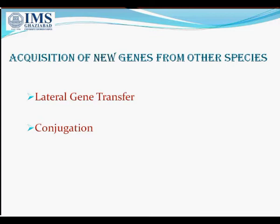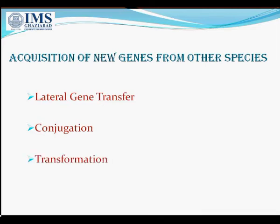The second method is conjugation. Conjugation means the transfer of DNA between two bacteria that come into physical contact with one another. For example, it enables plasmids to move between bacteria and frequently results in the acquisition of new genes, with the acquired new gene functions utilized by the recipients. The third method is transformation — the genetic alteration of a cell resulting from the direct uptake and incorporation of exogenous genetic material from its surroundings through the cell membrane.